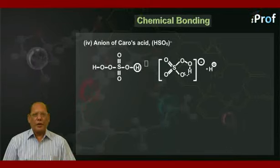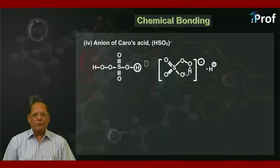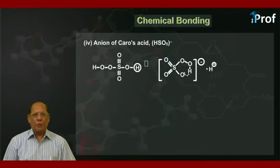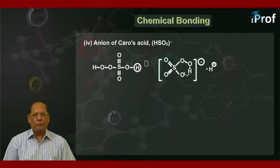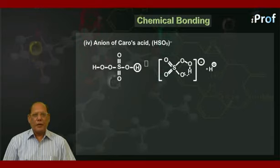The fourth example is the anion of Caro's acid. We know Caro's acid is H2SO5. It has two different types of H: one H is attached to oxygen and the other is attached to the peroxide group. The first H to be liberated as a proton is that which is attached to oxygen and not to the peroxide group. Therefore, H2SO5 dissociates to give the HSO5⁻ anion and a proton. In the structure of HSO5⁻, there is intramolecular hydrogen bonding.